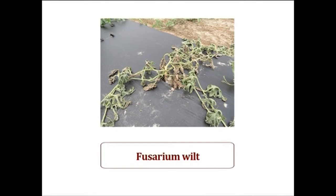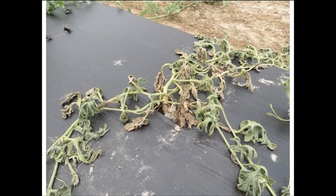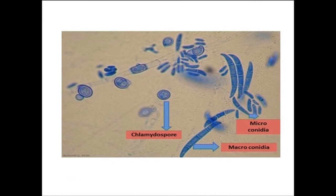The next disease is fusarium wilt. The pathogen causes yellowing and marginal chlorosis of leaves from the bottom upwards, with drooping and wilting of plants. Scientific classification: Kingdom Fungi, Division Ascomycota, Class Sordariomycetes, Order Hypocreales, Family Nectriaceae, Genus Fusarium, Species oxysporum. The disease is incited by Fusarium oxysporum forma specialis cucumerinum. The fungus produces septate mycelium and micro- and macroconidia; chlamydospores are also produced.